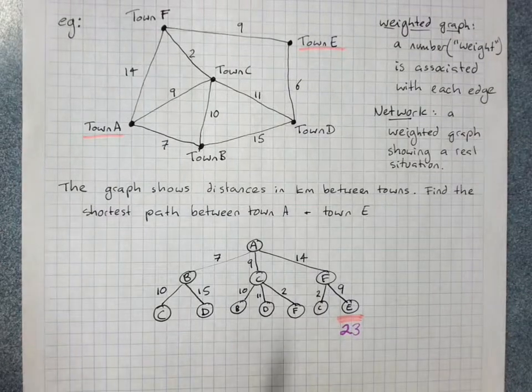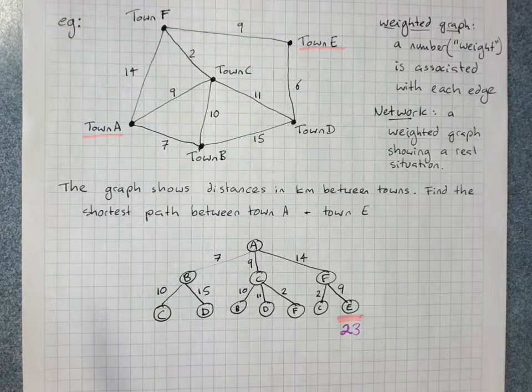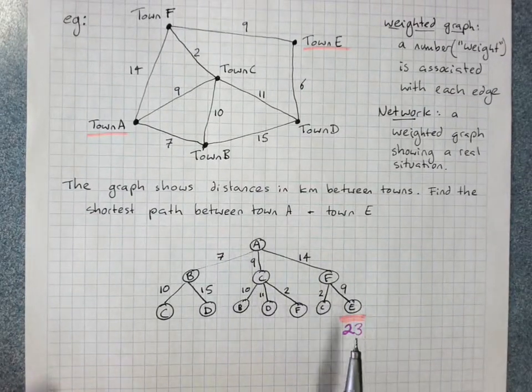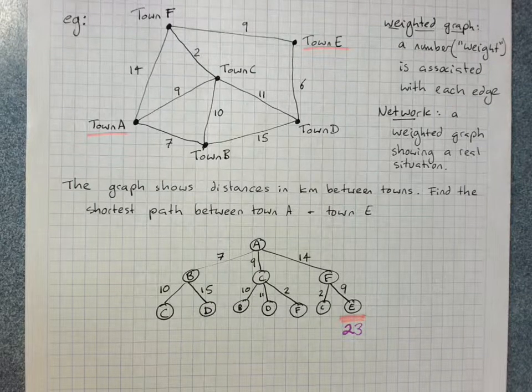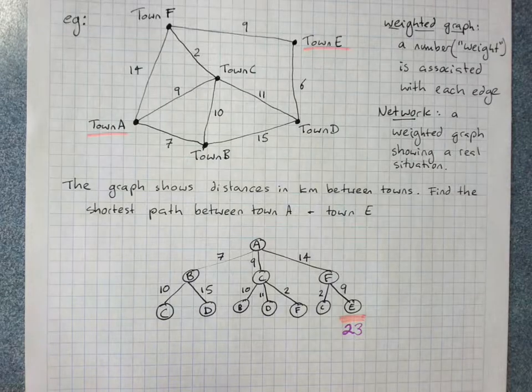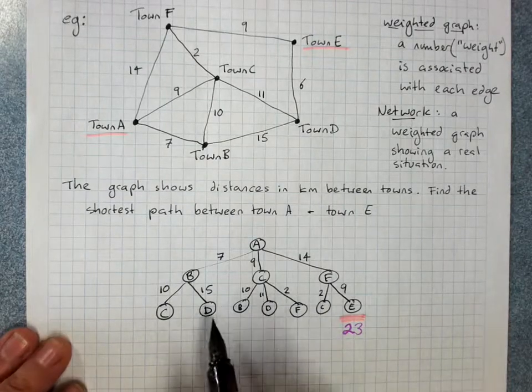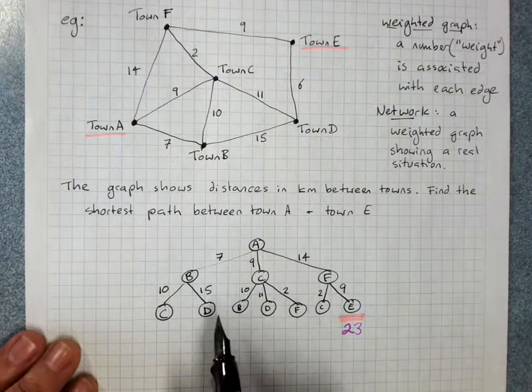Now automatically that means any path that's over 23 we can rule out, because this has got us to E in 23. We're looking for anything that's better than that. So start tracking along and work out how can I get to E.